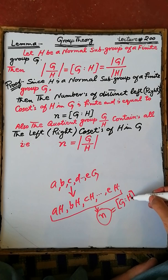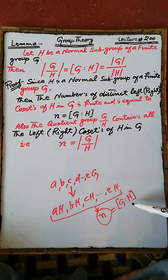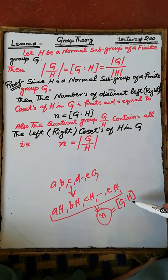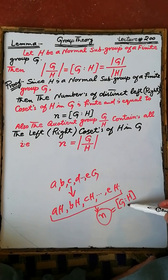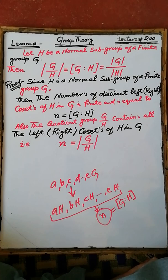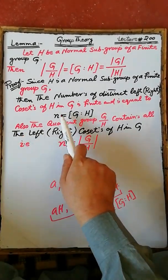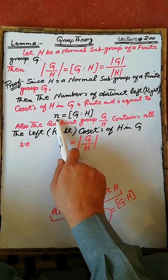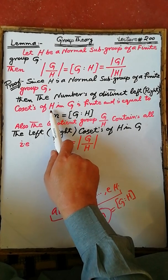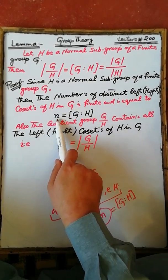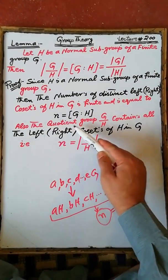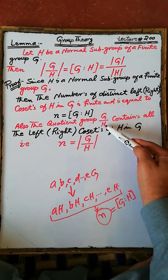This n is also called the index of the subgroup H in G, denoted accordingly. By definition of the index of a subgroup, the number of left or right cosets determined by H in G is called the index of H in G. Therefore the number of distinct left or right cosets is equal to n, and the quotient group G/H contains all the left or right cosets of H in G.